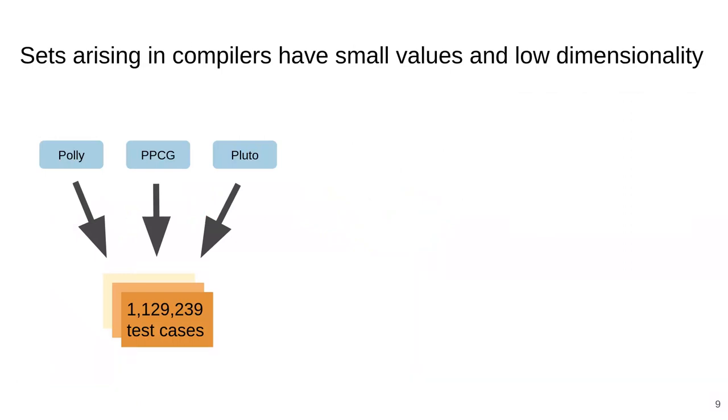In order to start performance tuning the library, we generated a benchmark of Pressburger arithmetic as used in polyhedral compilation. We did this by running the Polly, PPCG and Pluto polyhedral compilers on PolyBench and extracting the Pressburger operations that they perform. We extracted over a million test cases and observed some interesting characteristics of the sets that occur.